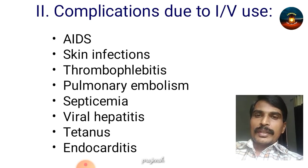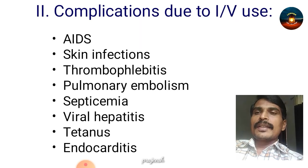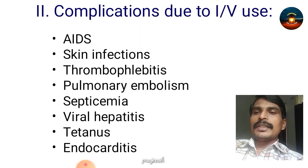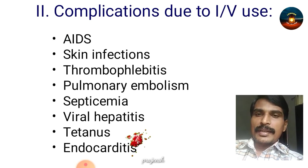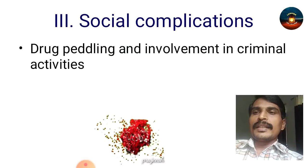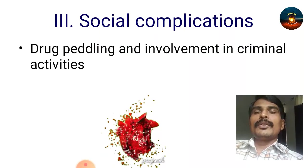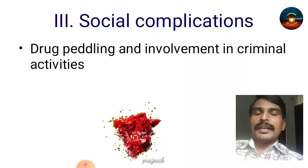Complications due to IV use — these are very commonly known and can also be asked as a question. They include AIDS, skin infections, thrombophlebitis, pulmonary embolism, septicemia, viral hepatitis, tetanus, and endocarditis. Social complications include drug peddling and involvement in criminal activities.